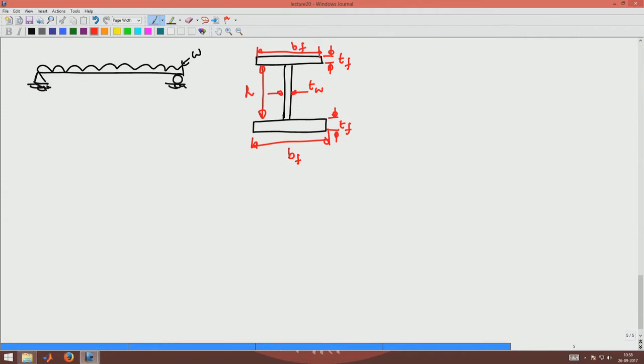Same flange thickness and flange width. Now there are many questions that we have to answer. What is the centroid of the cross section? What is the moment of inertia of this cross section and so on? Let us deal with each of them one by one.